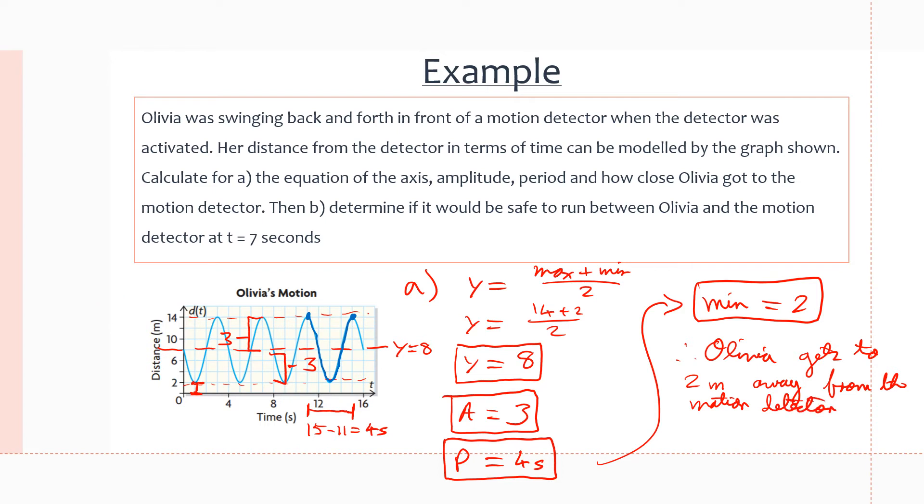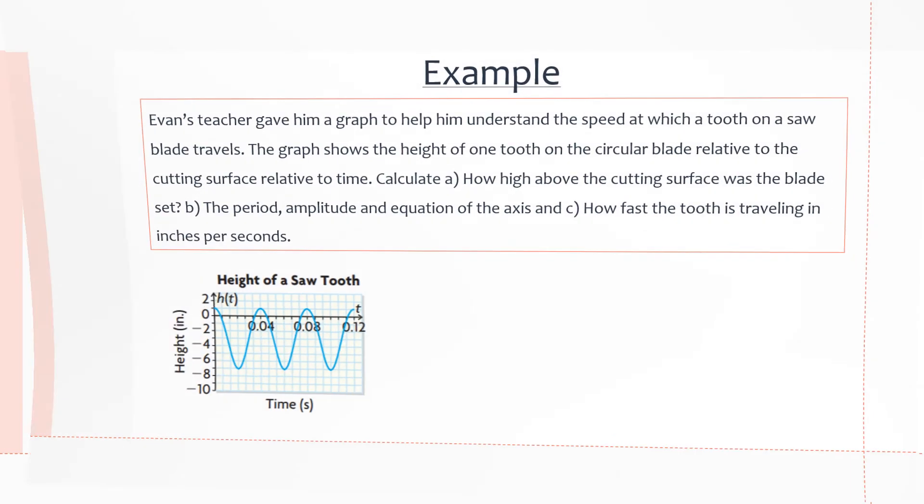Now for part B: determine if it would be safe to run between Olivia and the motion detector at 7 seconds. For this question we just need to look at the graph and see how far Olivia is from the motion detector at 7 seconds. We locate 7 seconds on the graph, which is about right here. Following this line up until we touch the graph, we can see she's at her maximum point, meaning she is the farthest away she can be during her swing from the motion detector. So yes, it is safe to pass between Olivia and the motion detector at 7 seconds.